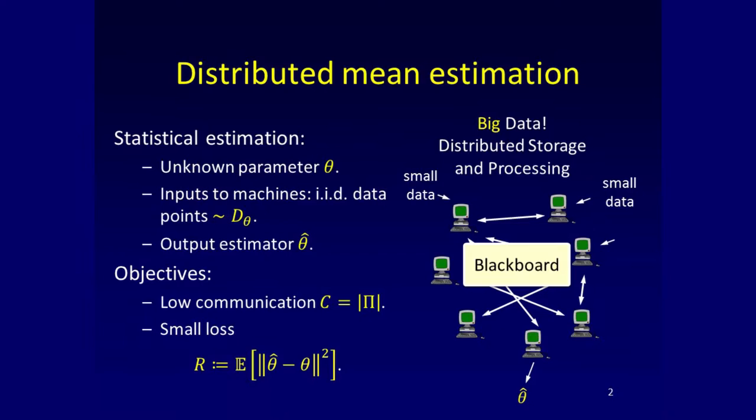The basic model is the same except we will be in the blackboard model. We have data that is partitioned, most of the time randomly partitioned — we don't assume it's distributed in some adversarial way. Communication is in the blackboard or broadcast model, meaning when one machine speaks everyone else gets the message. This is an easier model for algorithms and a harder model for lower bounds.